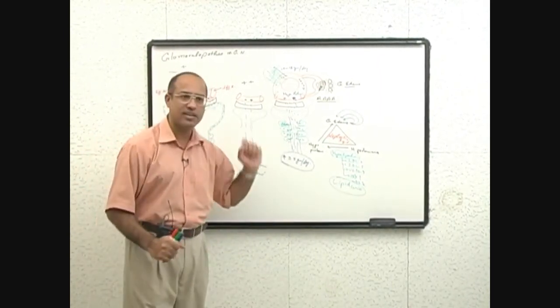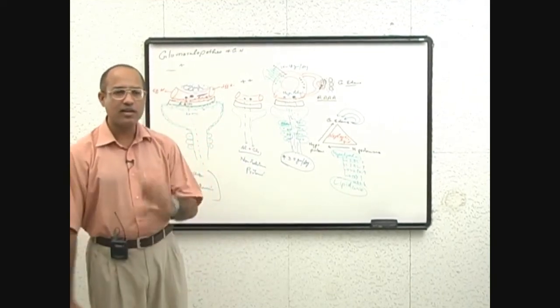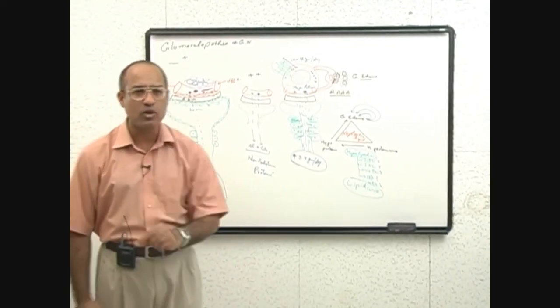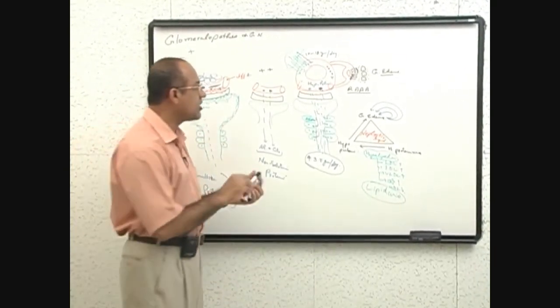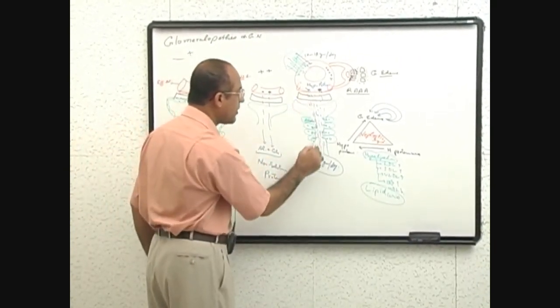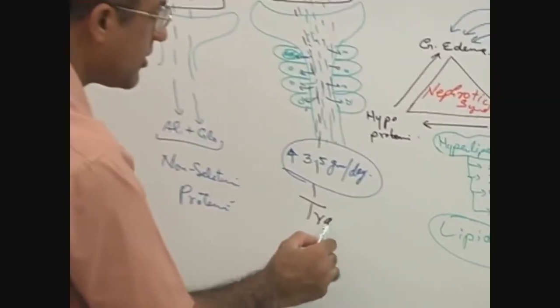Actually not only albumin leak in nephrotic, some other small molecular weight proteins also leak down. For example, one of the very small molecular weight protein is transferrin.